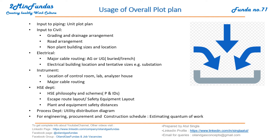Here we will discuss how the overall plot plan is used — once it is available, how other disciplines use this document. For piping, it is used to develop the unit plot plan, which we will discuss separately in detail. For civil, it is required for reading and drainage, port arrangement, non-plant building sizes and location, so civil can finalize all these three things based on the overall plot plan.